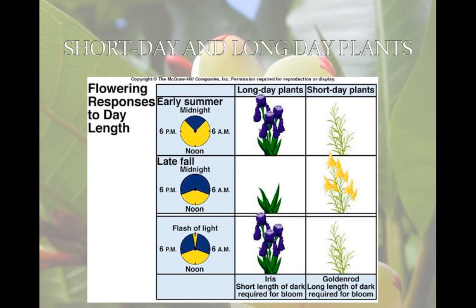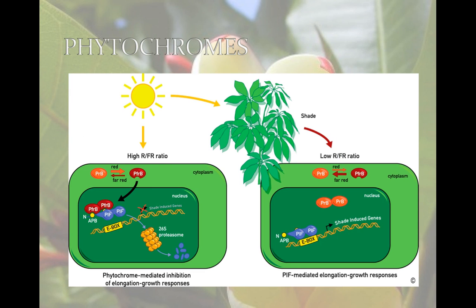Phytochromes are colored proteins in plants that contain a special set of atoms that absorb light. The light absorbed is red, so they appear blue or blue-green. Red light is the most effective in interrupting night length, therefore affecting blooming.